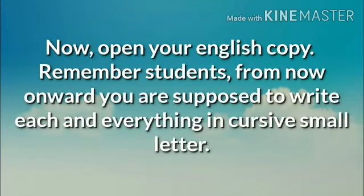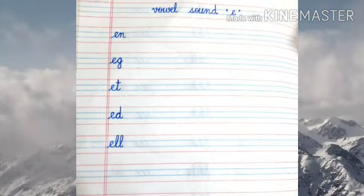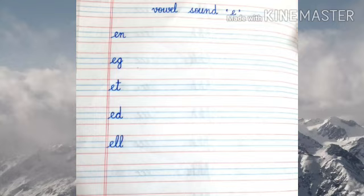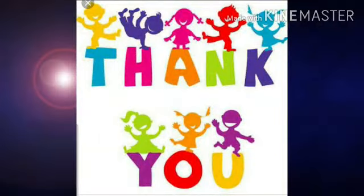Now, open your English copy. Remember, students, from now onward, you are supposed to write each and everything in cursive small letters. In your English copy, on the left-hand side, don't forget to write the date. And on the right-hand side, write CW. After that, write down the heading vowel sound E, and do the work as shown in the picture. After that, on the next page, write down the heading join the letters and do the work as shown in the picture. Thank you and have a nice day.